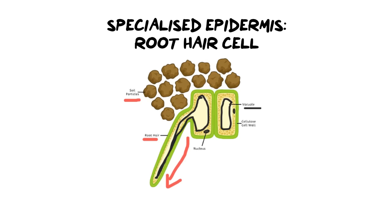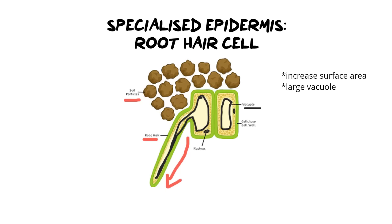Why do root hair cells do this? Root hair cells have two functions. The reason they have these elongated structures is to improve the surface area of the plant, because you want to absorb as many nutrients from the soil as possible. The second thing is you want a large vacuole — not just to help with the root hair but to help store the water or minerals coming in — and then once they're in the plant you can determine where they go.